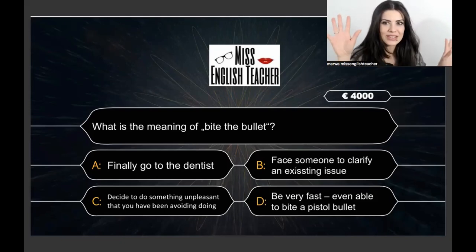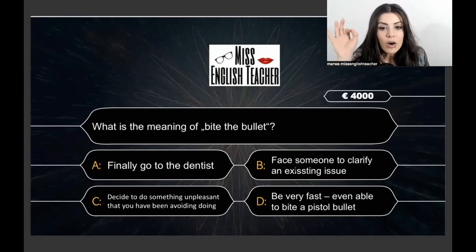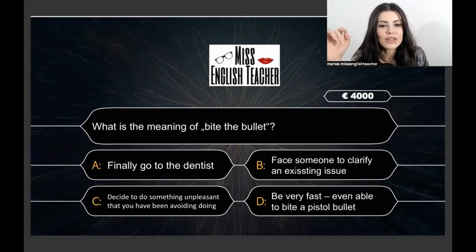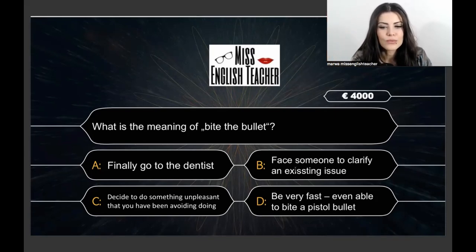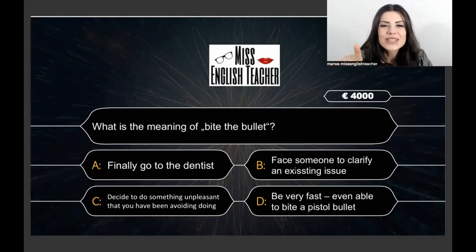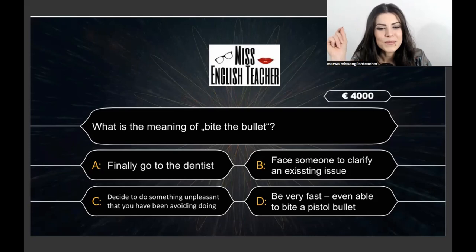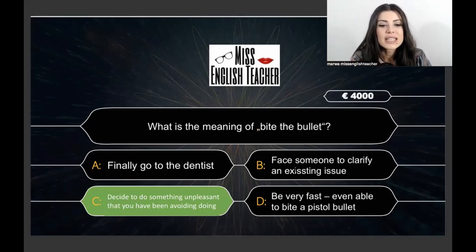€4,000 question: What is the meaning of 'bite the bullet'? Options: finally go to the dentist; face someone to clarify an existing issue; decide to do something unpleasant that you've been avoiding doing; be so fast you can bite a pistol's bullet. The correct answer is: decide to do something unpleasant that you've been avoiding doing.